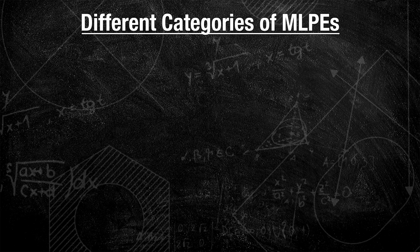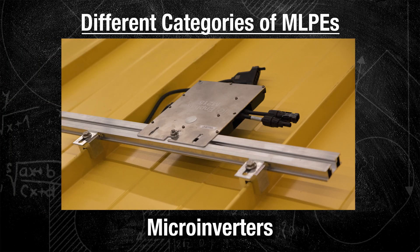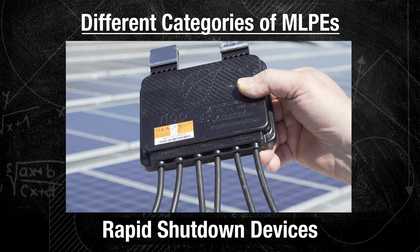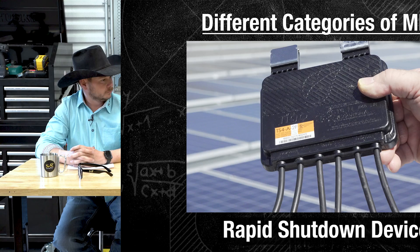So the first two categories of module-level power electronics we need to worry about are microinverters, which make usable power out of what the solar panels produce, and rapid shutdown devices — safety measures that ensure the system is safe in case of any type of emergency. But now let's get down to what we're really talking about today: optimizers. We've got one sitting right here.